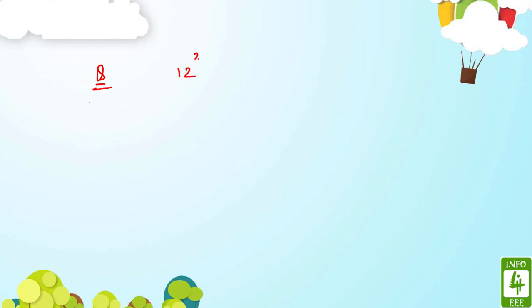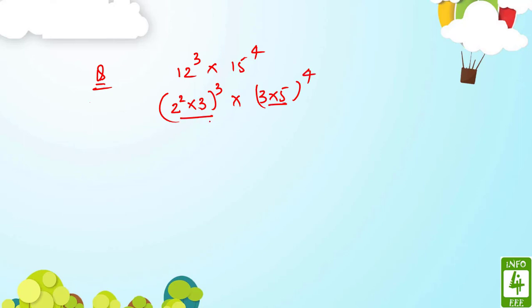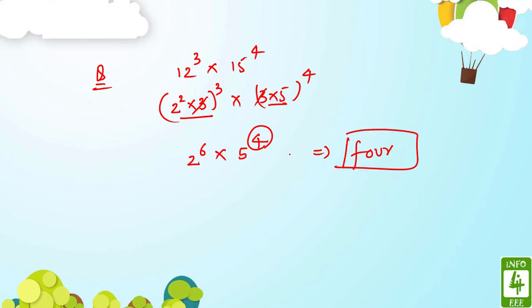They can also give questions with powers. For example: 12³ × 15⁴ — how many zeros? Break into pairs of 2 and 5: 12 = 2²×3, so 12³ = 2⁶×3³. 15 = 3×5, so 15⁴ = 3⁴×5⁴. We ignore 3. We have 2⁶ and 5⁴. The lesser is 4, so there are 4 zeros at the end.